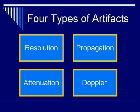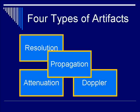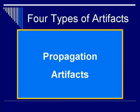Now let's move on to propagation artifacts. As mentioned earlier, this group forms the largest category among the four artifact types discussed in this lecture. It includes phenomena such as mirror image, reverberation, multi-path phenomenon, speed propagation error, as well as other artifacts we will discuss in detail later.